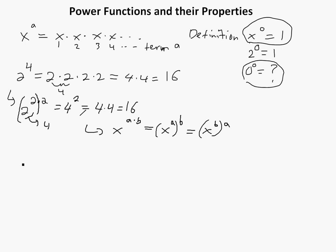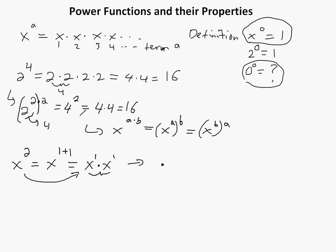Now let's go through some more properties. Let's say we have x squared. If you separate this apart, this will just be x to the 1 plus 1, so the exponents are just added together. Or you can go from x times x — each has a 1 as its exponent — so that adds together. In general, you have x to the a plus b, which equals x to the a times x to the b.